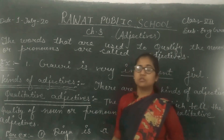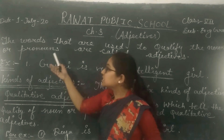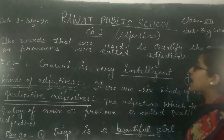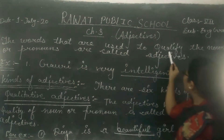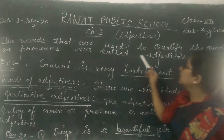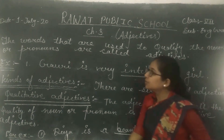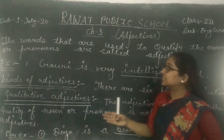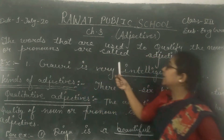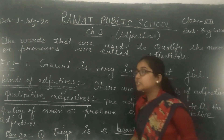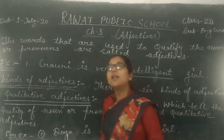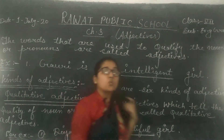So what is an Adjective? The words that are used to qualify the nouns or pronouns are called Adjectives. The words which describe a noun or pronoun are called Adjectives.